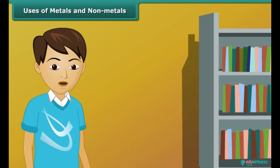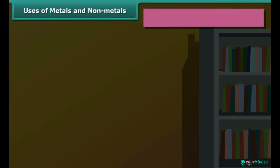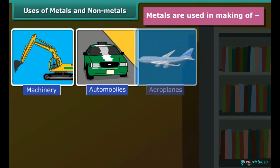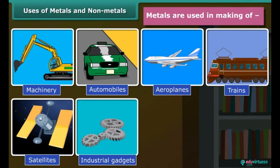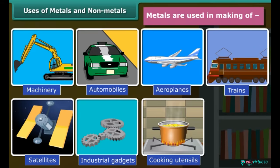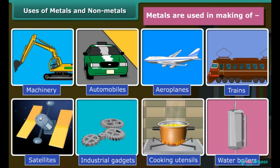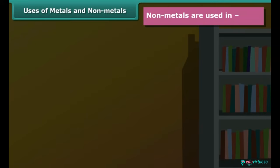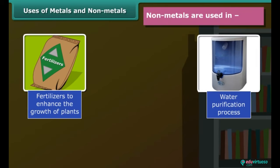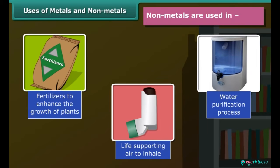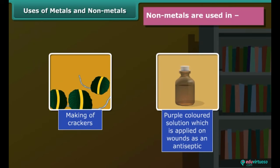Now let's move on to another important topic — what are the uses of metals and non-metals? As we know, metals are hard in nature, so they are used in making machinery, automobiles, aeroplanes, trains, satellites, industrial gadgets, cooking utensils, water boilers, etc. Non-metals are not as hard, so they are used in fertilizers, water purification processes, life-supporting air, crackers, and as a purple-colored antiseptic solution on wounds.